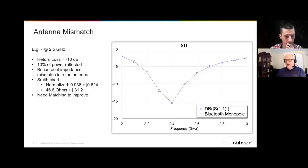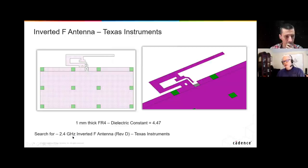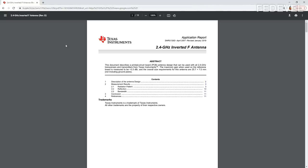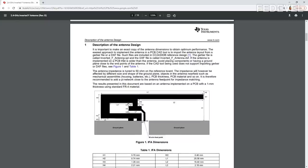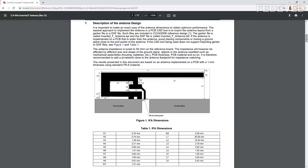Let's get to the inverted F — this is what your viewers are more likely to try to make. This is printed on a PCB board, a piece of FR4. I actually got this design from Texas Instruments, and if they just search for '2.4 gigahertz inverted F Texas Instruments' they'll find it. They have the layout — you can literally bring it into your layout tool.